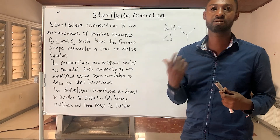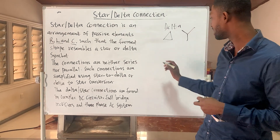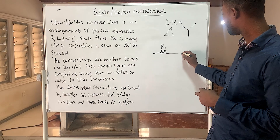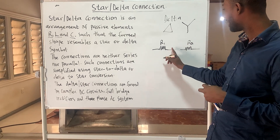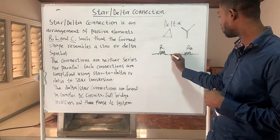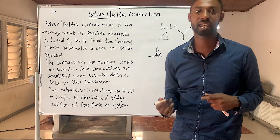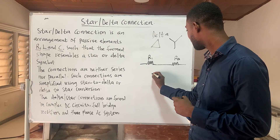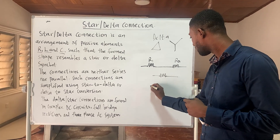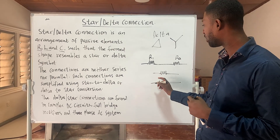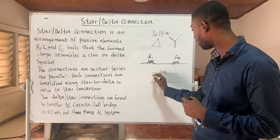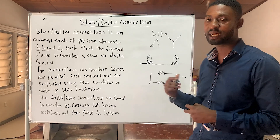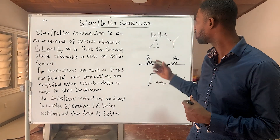When we talk about series connections, resistors are connected in series if one end of R1 is connected to the other end of R2, meaning the same current flows through them. When connected in parallel, the two ends are joined together, meaning they share the same voltage but the currents flowing through them are different.